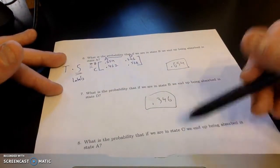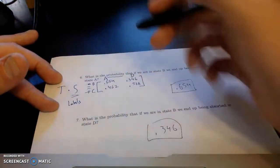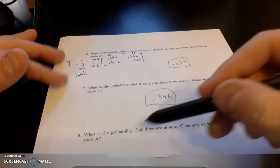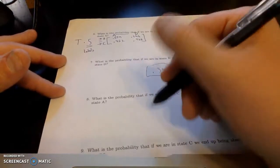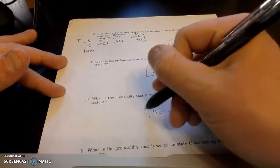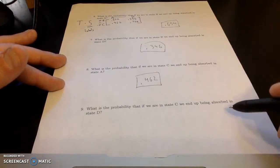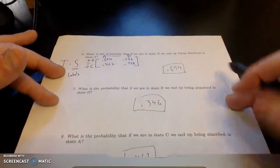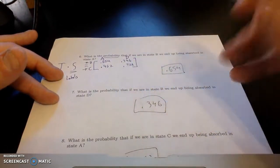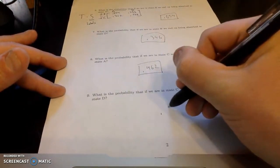If we are in state C, now I'm going to look at the second row. What's the probability of being absorbed into state A? That's 0.462. And lastly, if we are in state C, what is the probability of being absorbed in state D? That is the second row, second column, 0.538.